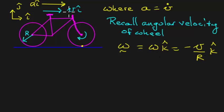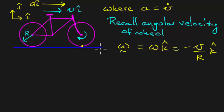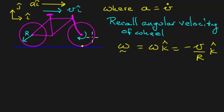Note that if v is positive — the bike is moving forward — then the angular velocity is in the minus k-hat direction. That makes sense from the right-hand rule: if you take your thumb and stick it in the minus k-hat direction, which is into the screen, your fingers wrap around in the clockwise direction, which is the direction of wheel rotation.